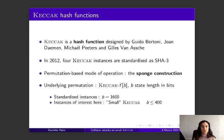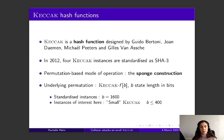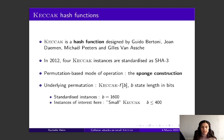Keccak uses a permutation-based mode of operation called the sponge construction. The underlying permutation is called Keccak-f-B, where B is the state length in bits. For standardized instances, the state has length 1,600 bits. But today we are going to focus on so-called small Keccak, where the state has length at most 400 bits.